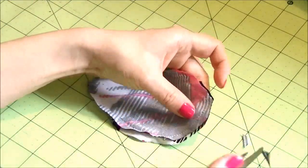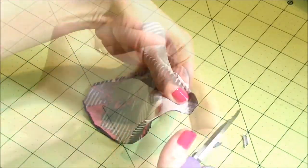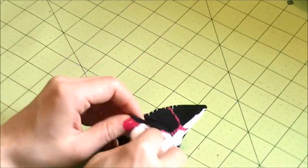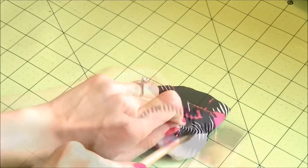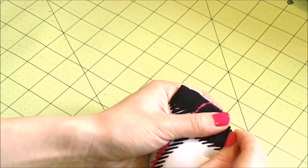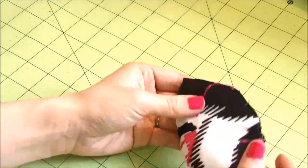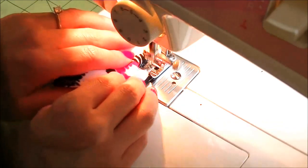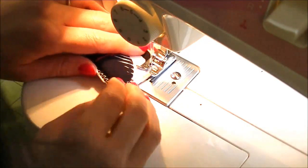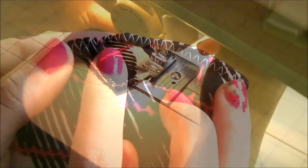Snip off the corners, flip the pockets and stuff them with the batting. Make sure to fill all the way into the corners. Once the pockets are filled to your liking, pin the gaps and do a wide zigzag stitch all along the edge. Try to catch the batting inside with the stitches. This will ensure the batting doesn't move around when you wash them.